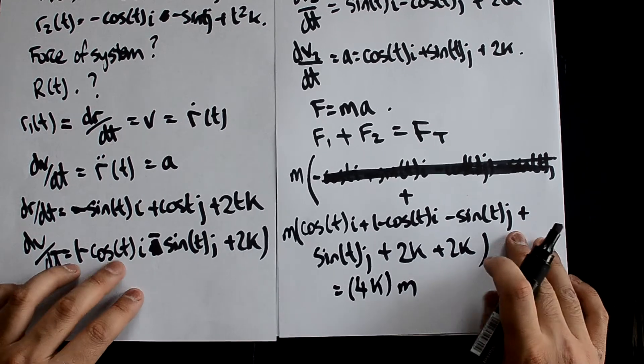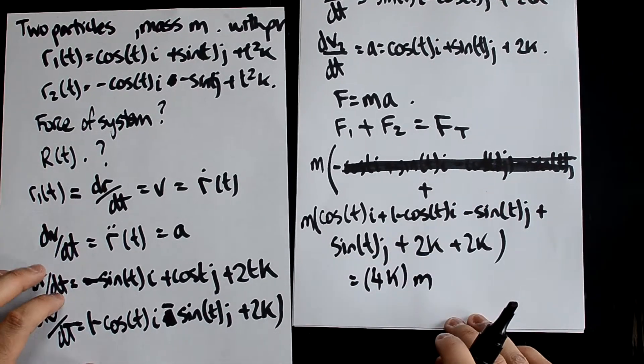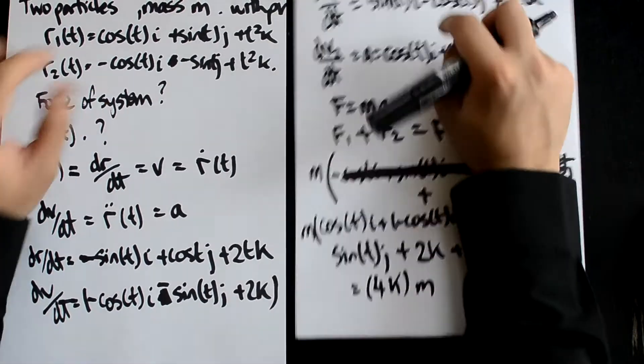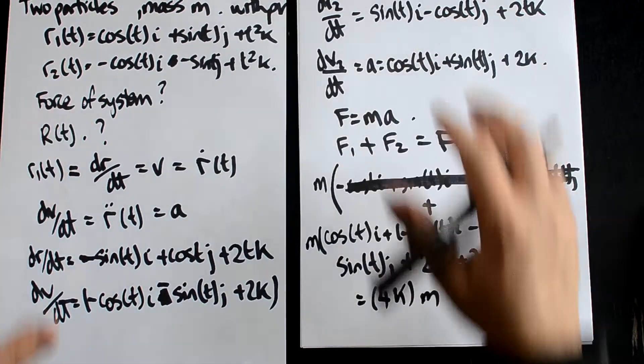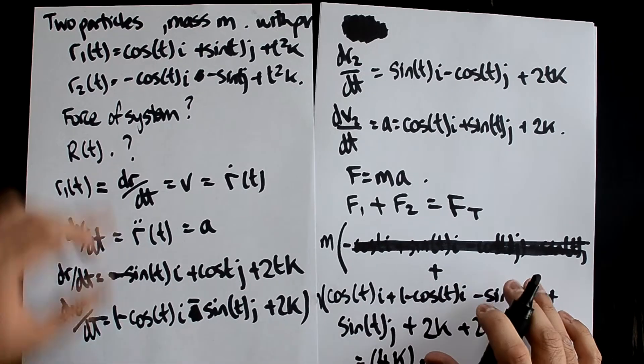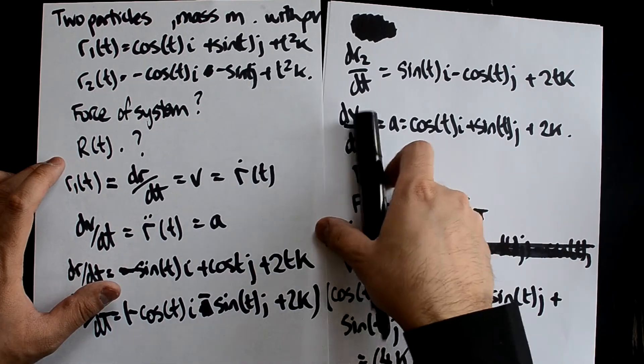So here we have now found the force of this system. So this system is just simply the differential of each of these multiplied by the mass, and there you have it. You get 4kM. In my next video, I'm going to be explaining how to find RT.